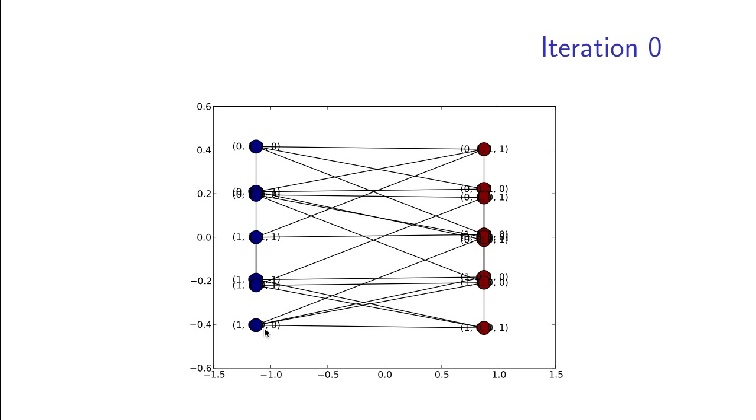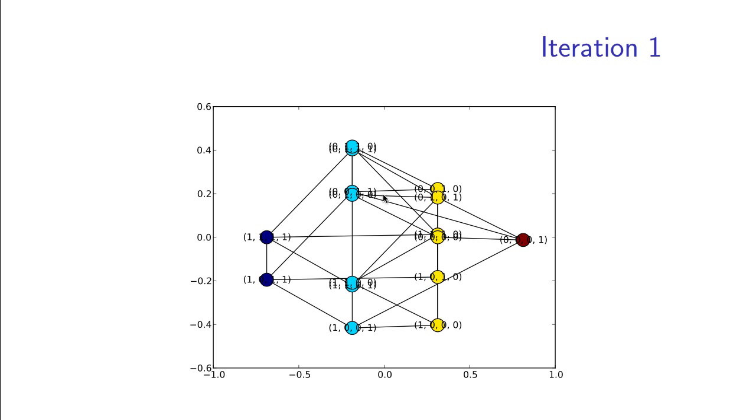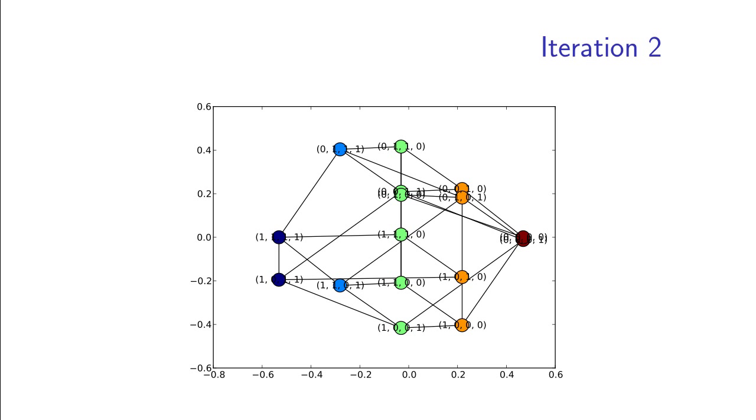And at every step, every vertex will be updated to be half what it was before plus one eighth the summation of the neighbors. This is what we get after one step. This is what we get after two steps.